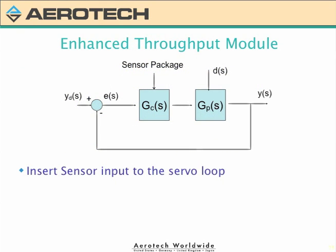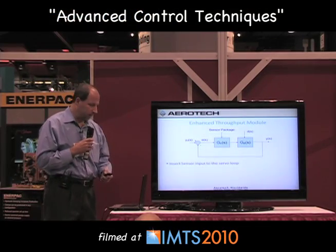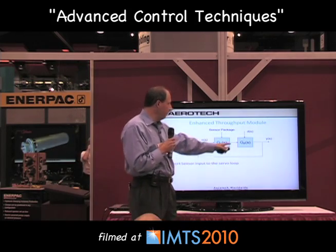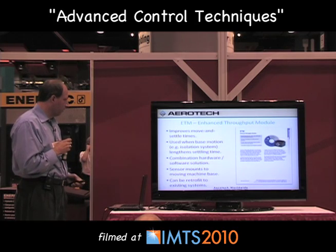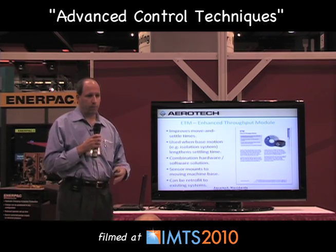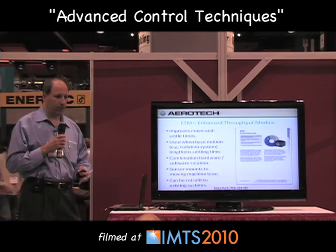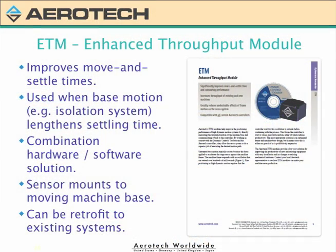The second technique we use to mitigate error and follow better is the enhanced throughput module. I basically take a sensor package, mount it to my base, and feed that into the control algorithm to counteract base movement or disturbances entering the system. We mostly use this for improving settle time — you have a move-and-settle problem and you'd like to quickly move but also settle very fast to improve machine throughput. It has both hardware and software components and can be easily retrofitted onto an existing machine.